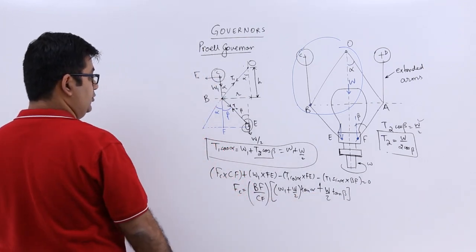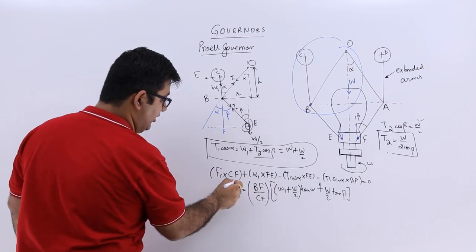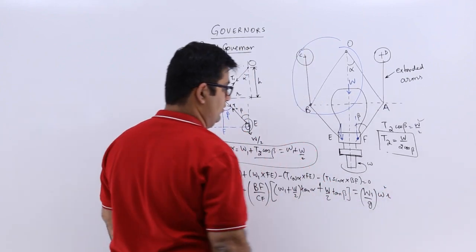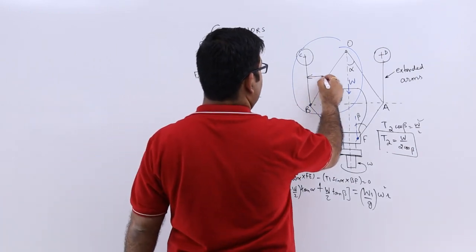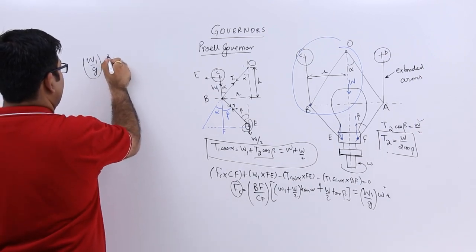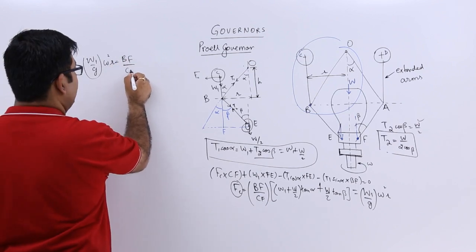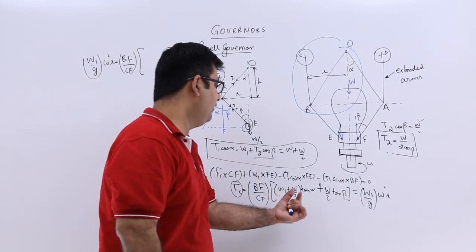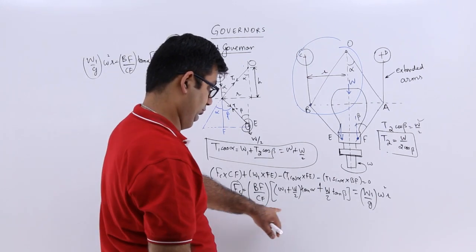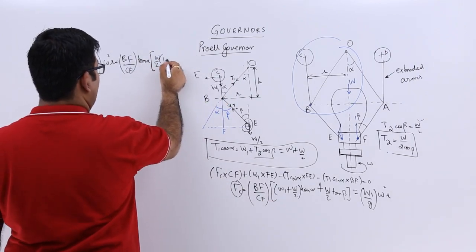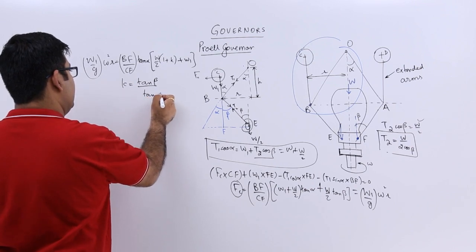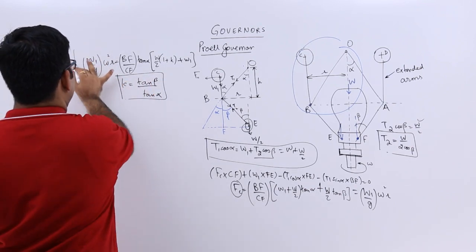I can take tan alpha common, which gives me an expression. Let's set this equal to W1 by G into omega squared R, where R is this distance. So you will have W1 by G into omega squared R equal to Bf upon Cf into tan alpha, which gives W1 by G into 1 plus K plus W1, where K is equal to tan beta upon tan alpha. So this is the expression that you get.